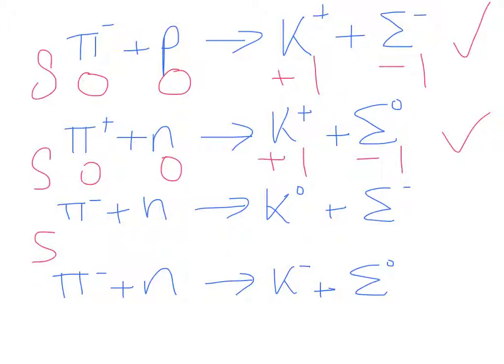For the next one, zero strangeness for the pi-meson and the neutron, and then we have the K-nought. Well we know that our sigma-minus is minus one so our K-nought must be plus one because this interaction, this reaction is observed.